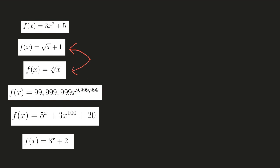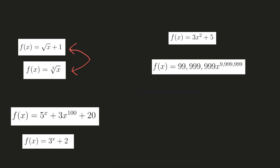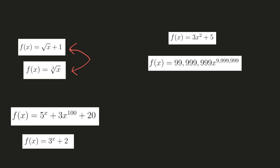Which one of these has the largest power? Obviously this one, which means that 3x² + 5 is going to grow slower. So I'm going to put this one here, and then the other polynomial under it.